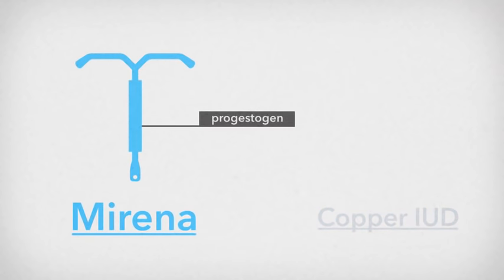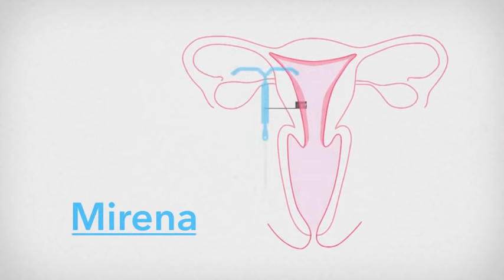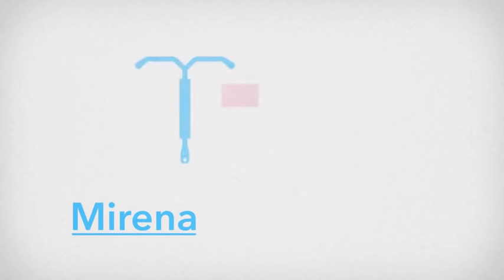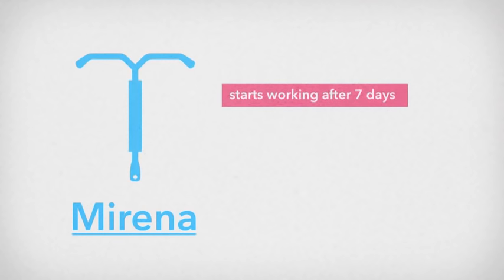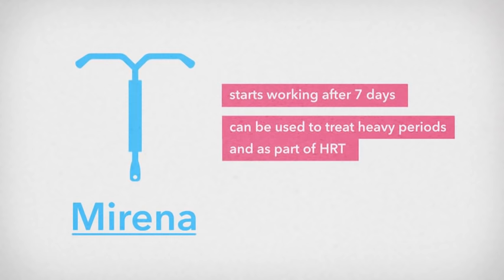The Mirena has a hormone called progestogen within it. This hormone makes the lining of the womb thin and also makes the mucus at the neck of the womb thicker so sperm can't get in. The Mirena takes 7 days to start working effectively. The Mirena can also be used to treat heavy periods and as part of hormone replacement therapy at the time of the menopause.